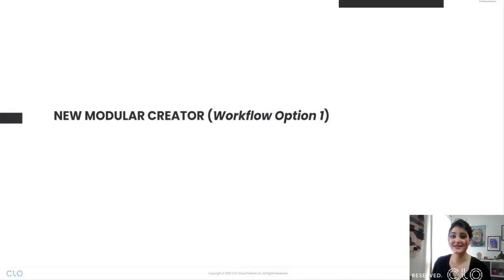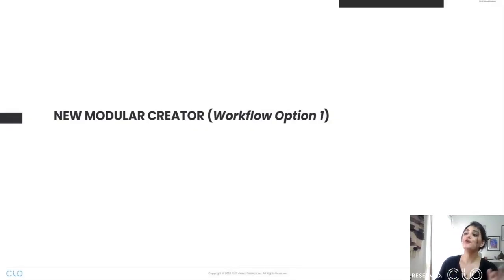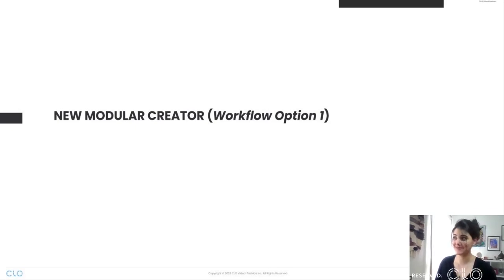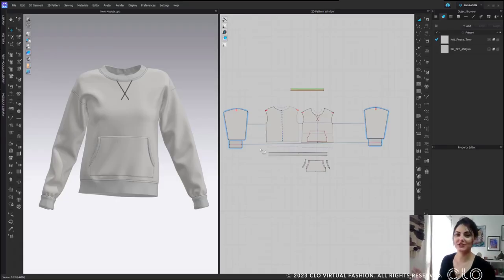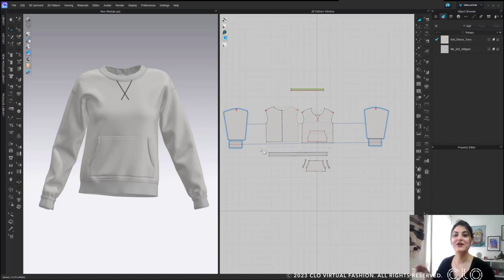So what we did for you all in 7.2 is we made this so much easier — like crazy easier. Let's go to the easier section. That is our second part of today's lesson: New Modular Creator, Workflow Option One. Congratulations, you've gone through the hard one — easy from here on out.